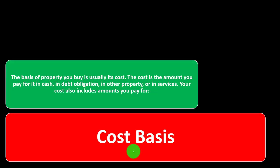The basis of property you buy is usually its cost. The cost is the amount you pay for it in cash, in debt obligation, in other property, or in services. You can think of the cost as what you paid, whether in cash or by taking on debt. Even with a mortgage, you are still paying for the property — the property is still yours.